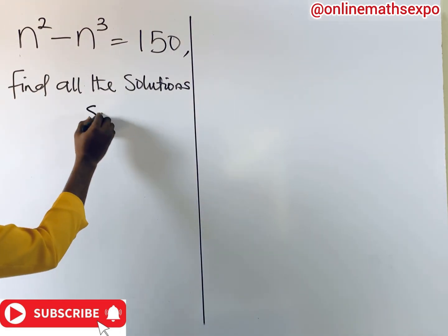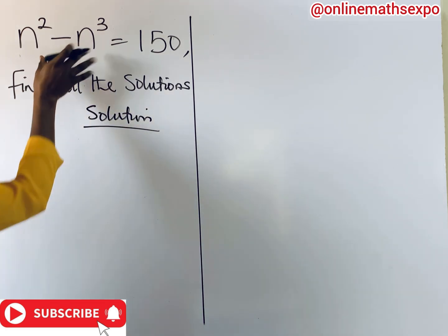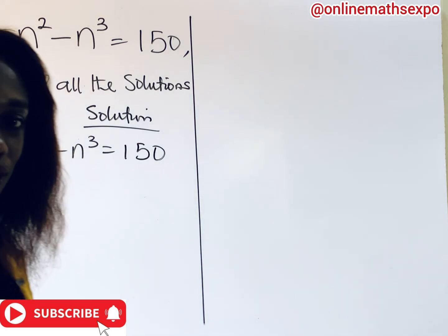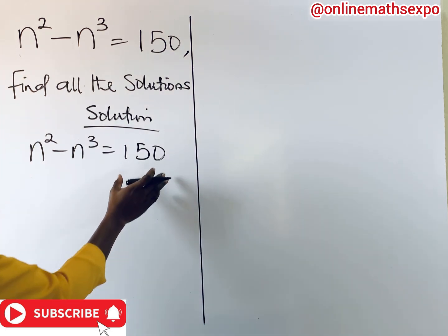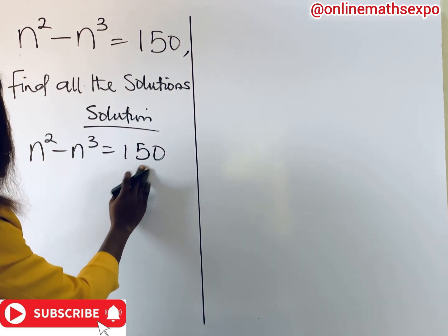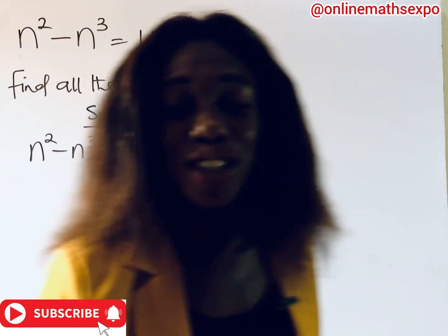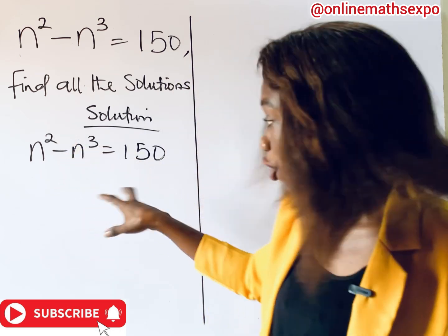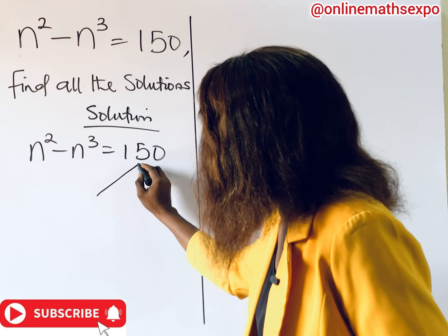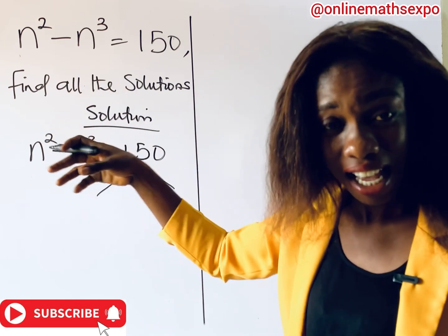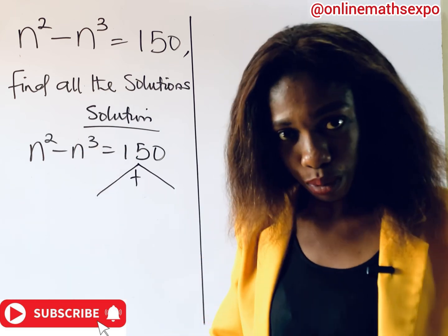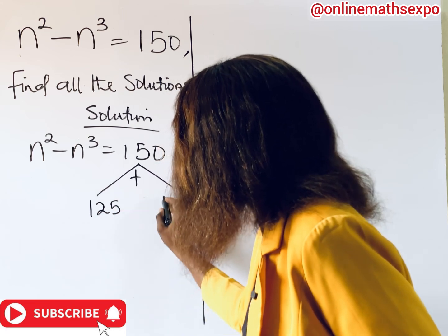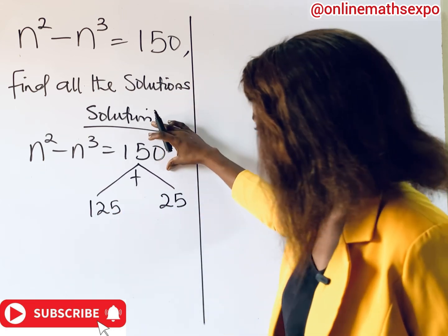We begin with the solution. We have n squared minus n cubed equals 150. Now, ask yourself: are there two numbers you can add to give you 150? Out of these two numbers, because this power is 2 and this one is 3, one can be expressed as a square and the other as a cube. The numbers are 125 and 25. If you add these two, it gives you 150.